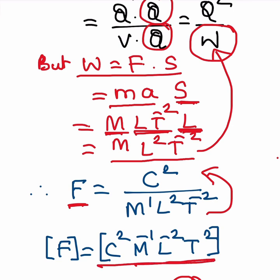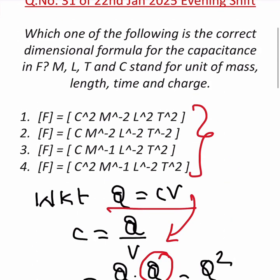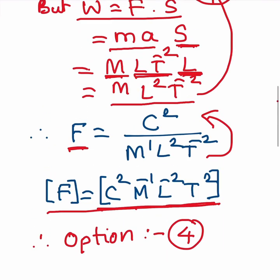So dimensions of F is equal to C squared M to the power of minus one L to the power of minus two T square, and this is in option four. You can clearly see this is option four, so the answer is option four.